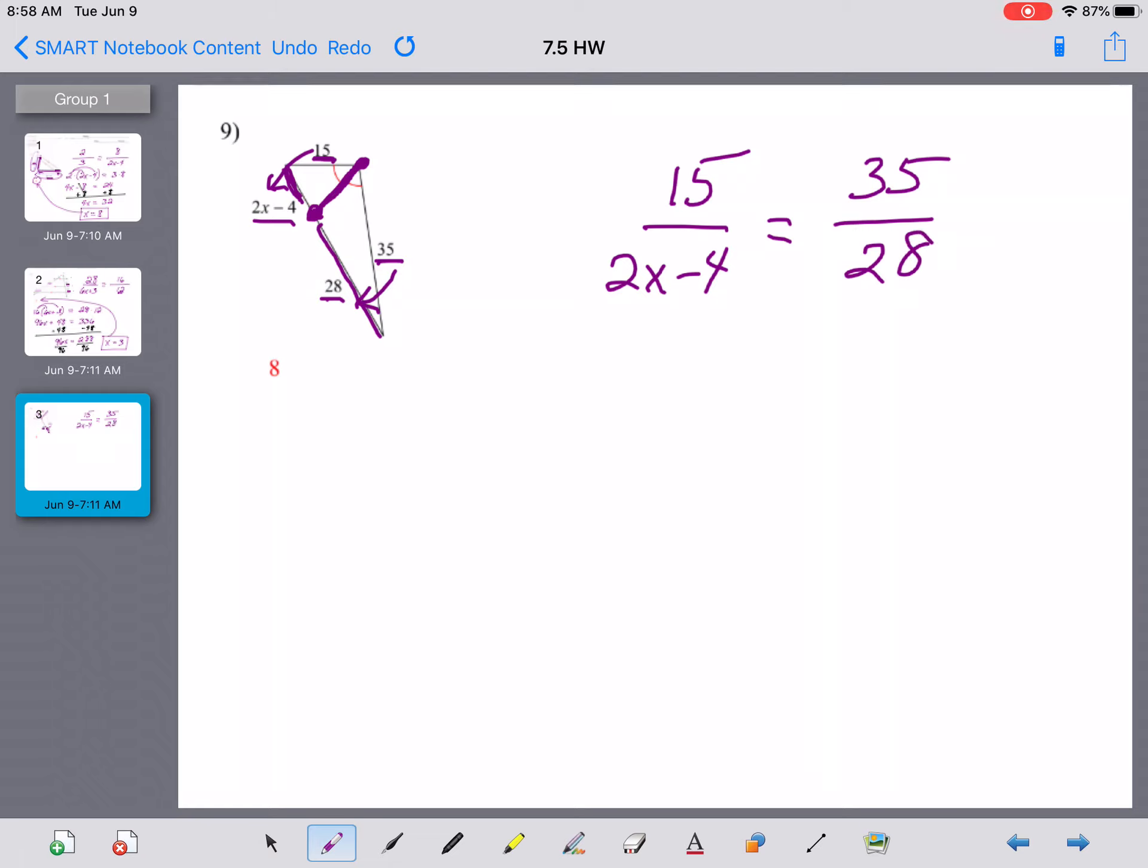Again, there's eight different ways you could set this proportion up. You could have gone 15 over 35, you could have gone in this direction, equals 2x minus 4 over 28. That would be another common one I would expect to see sometimes, but all of them are right, if you're just following a set pattern. All right, let's cross multiply.